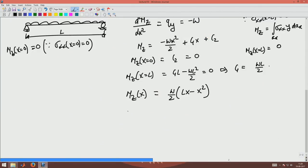So v y is minus d mz by dx which is minus W by 2 L minus 2 x. So that is v y of x.